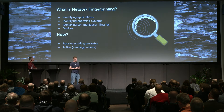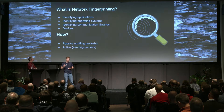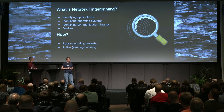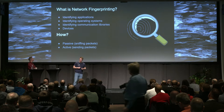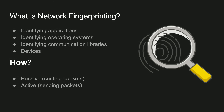What is network fingerprinting? It can be used to fingerprint which application is running, which operating system, and communication or TLS libraries. It can also fingerprint devices — for example, identifying a toaster or a car on the network. It can mainly be done in two ways: passively by sniffing packets using PCAP, Wireshark, or on a Wi-Fi network, or actively by sending packets to a host.